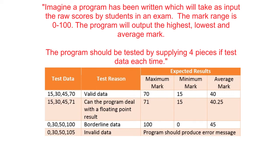We also need to test that the program won't accept invalid data. So we've taken a value outside the range — 105. In this circumstance, if our program is working as expected, it should produce an error message.